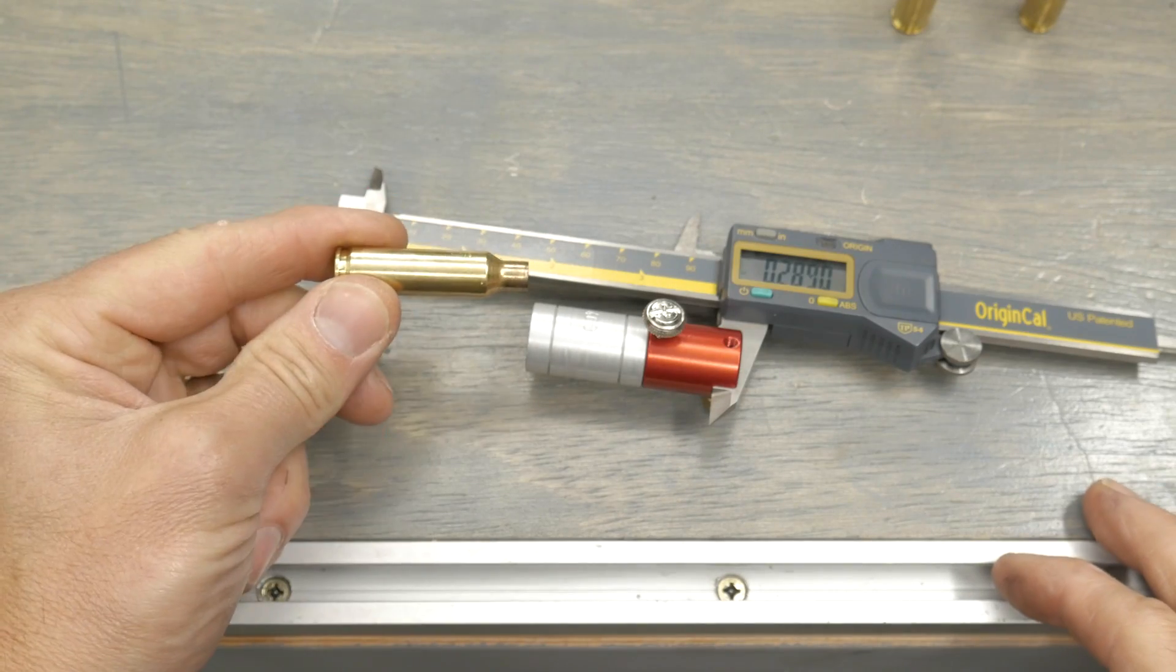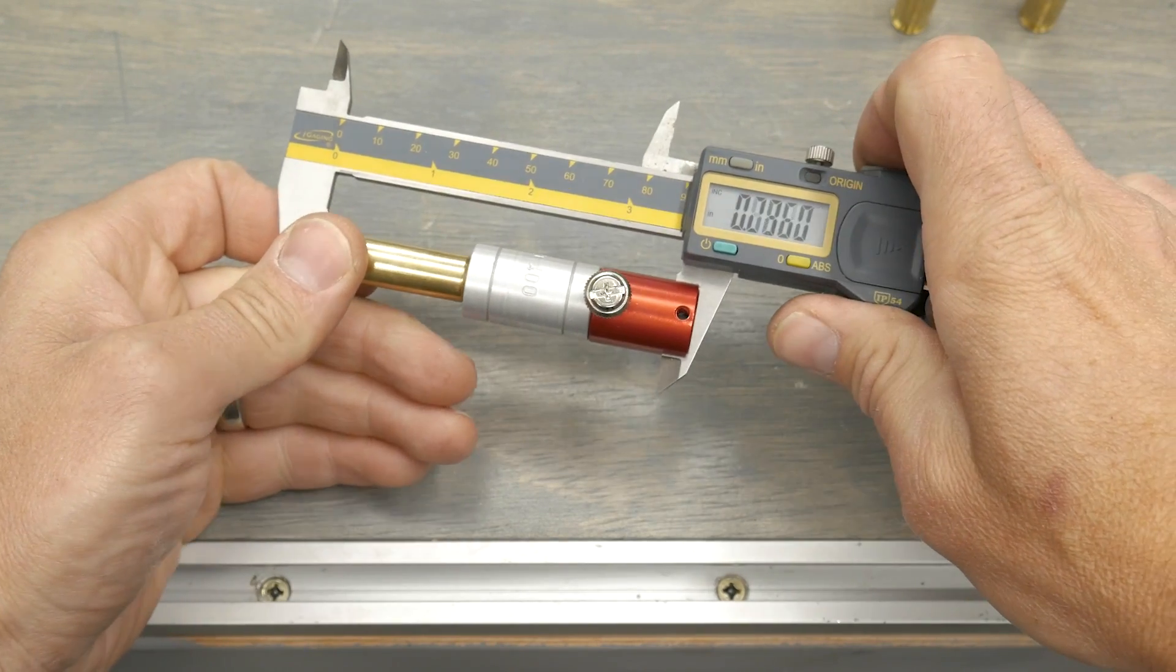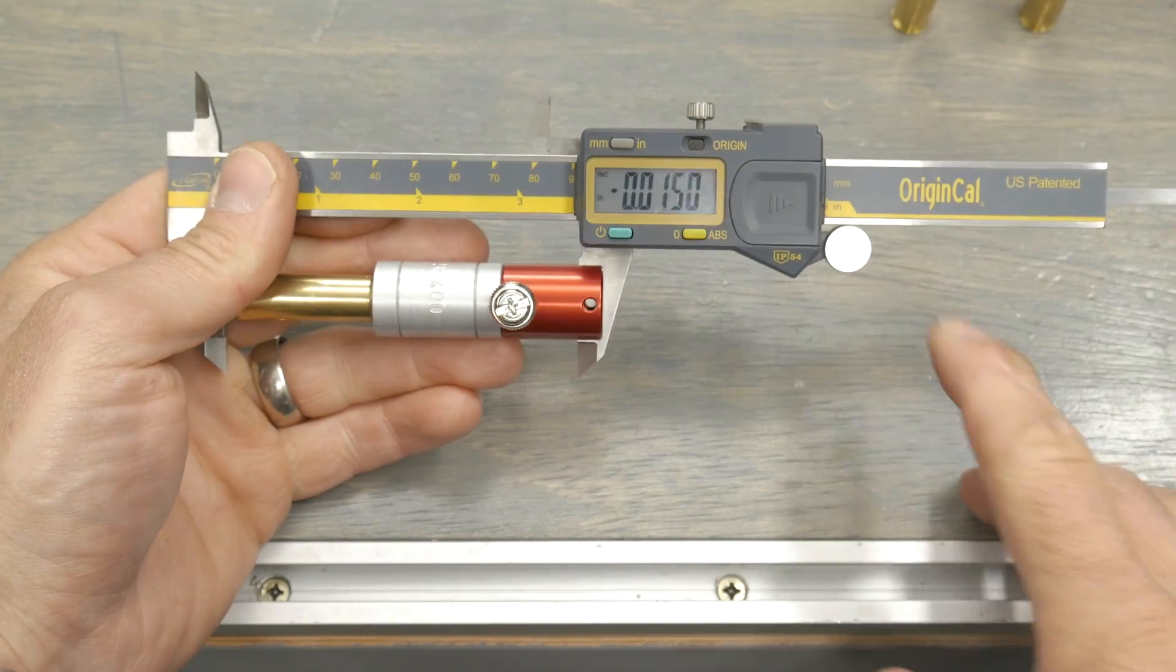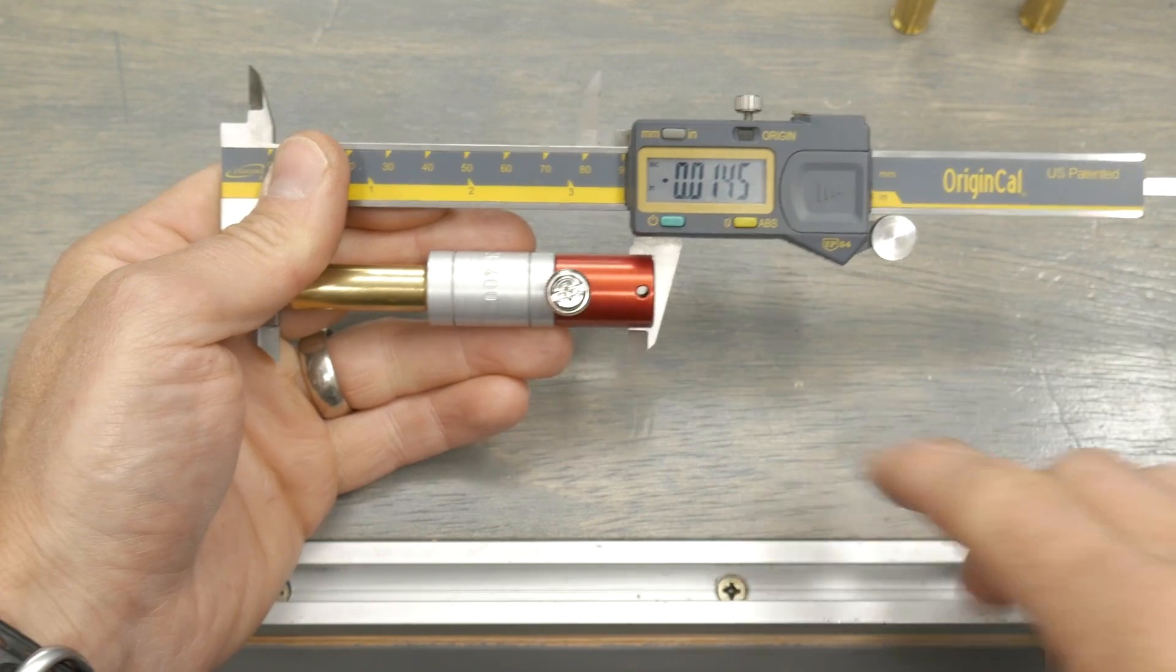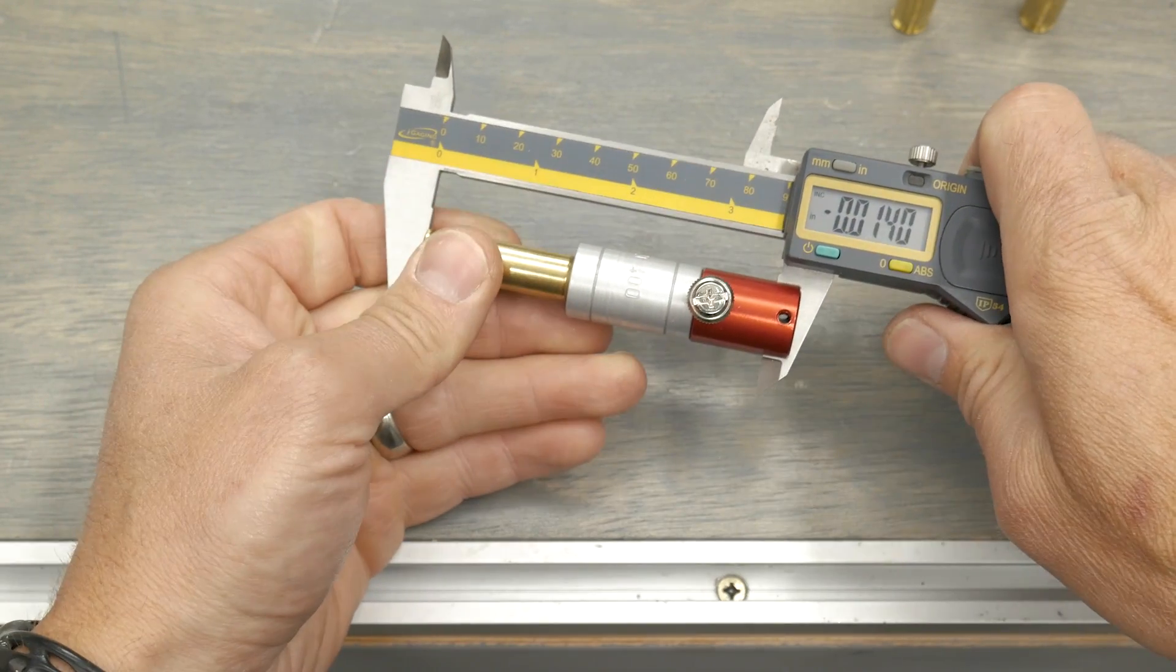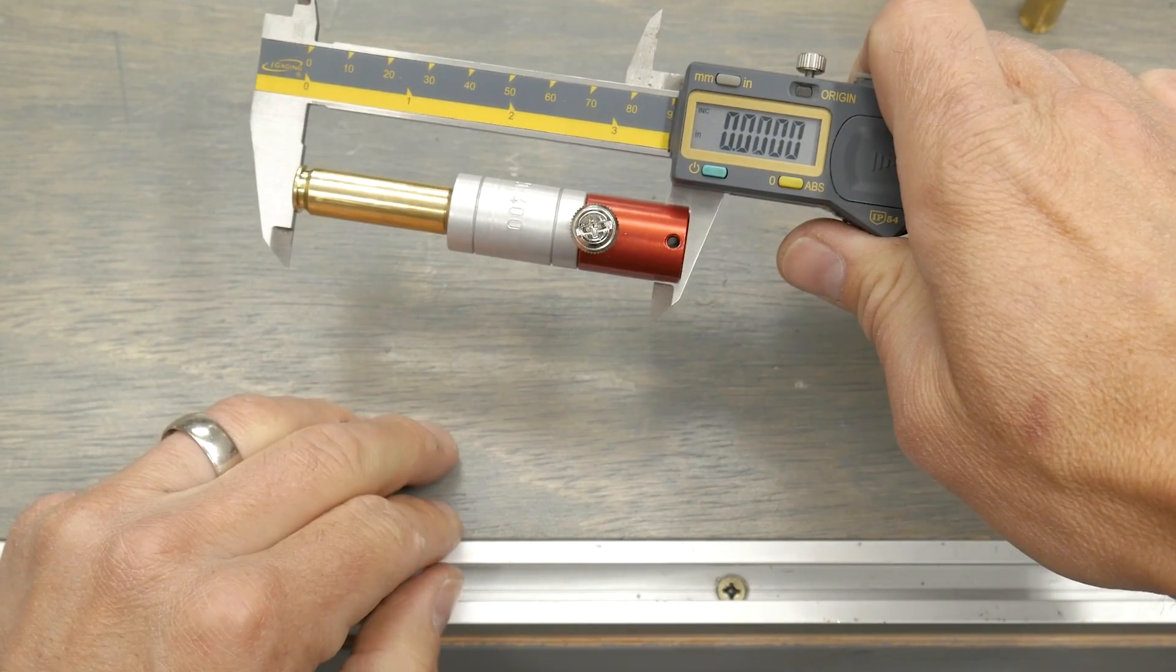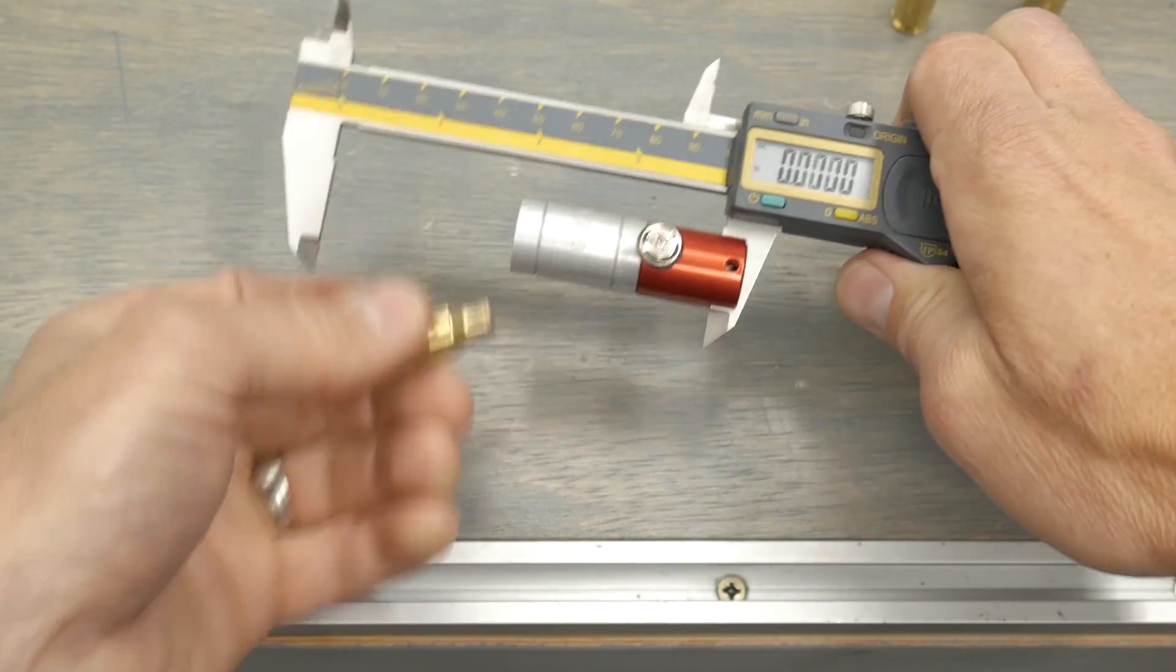In order to measure shoulder bump, we're going to take a previously fired case and insert it into a set of digital calipers. These are iGaging OriginCal, 0-6 inch, outfitted with a Hornady Headspace Comparator Kit. With slight pressure and with a little bit of rocking and rotating, we're going to zero this out. Now we size the case and then we'll measure again.